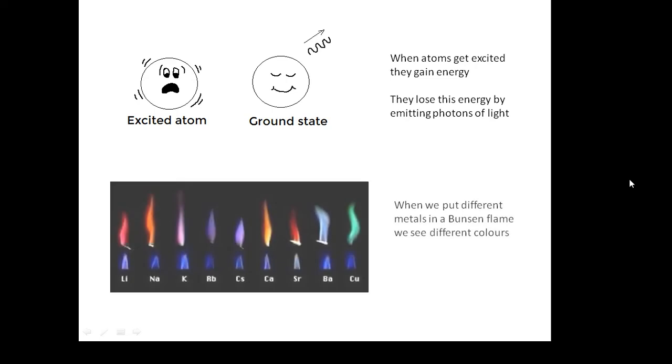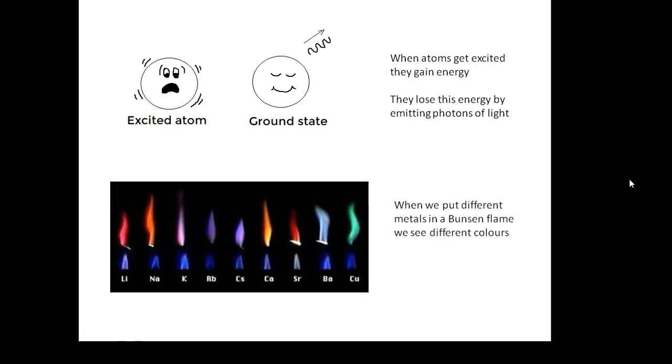And something very interesting is that different elements emit different wavelengths of light. There's a thing that they do in chemistry called a flame test, where they put different elements in a Bunsen flame. And when you do this, you get different colours, because different elements emit characteristic colours of light.